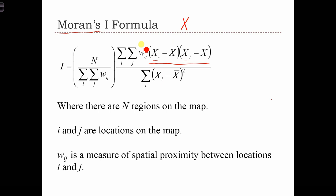And we're going to use this w as a measure of spatial proximity between i and j. So w sub ij is some kind of weight that tells us how close together locations i and j are.